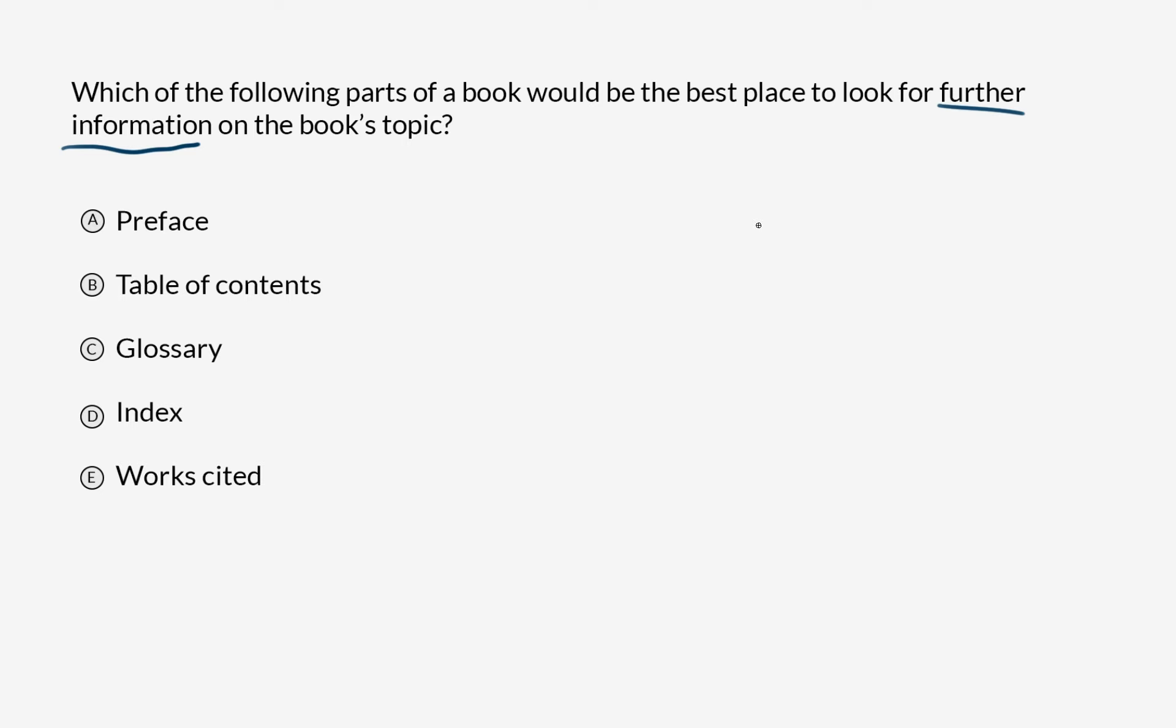So the question being asked here is where does more information about a book's topic live beyond just the text of the book, which isn't even an option here. Let's take a look at the choices. A, in the Preface. B, the Table of Contents. C, the Glossary. D, the Index. Or E, Works Cited.